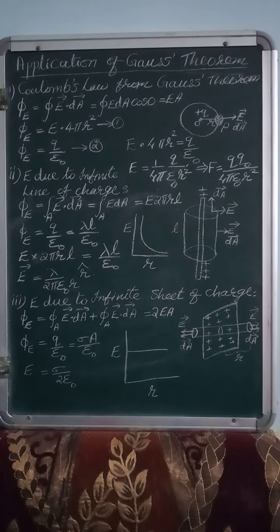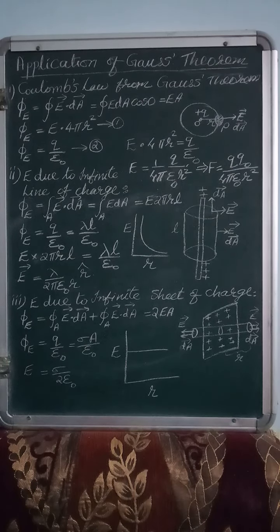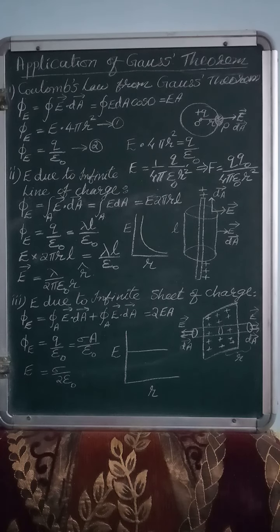The topic we were doing in the last class was Gauss theorem. According to Gauss theorem, the electric flux formula we have learned is Φ_E = Q/ε₀. It means electric flux does not depend upon the shape and size of the Gaussian surface. It depends upon the charge contained in the Gaussian surface.